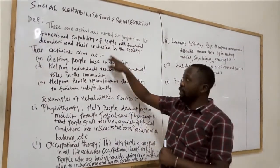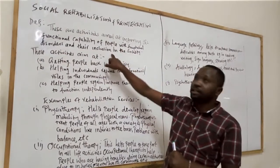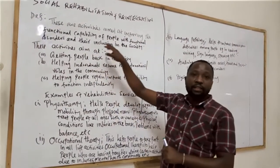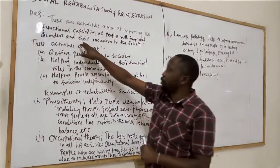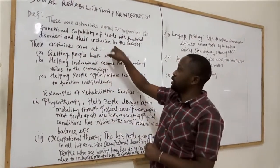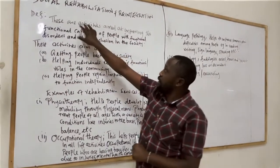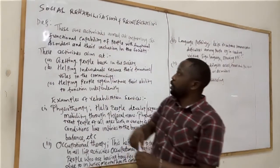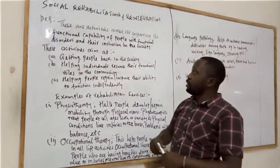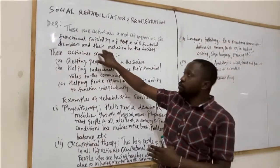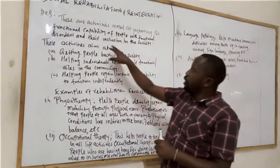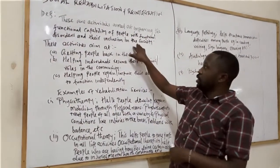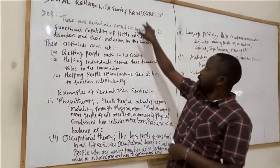When we bring in the aspect of their inclusion in the society, we are now looking at reintegration. Reintegration refers to the assistance that is given to people during their re-entry into the society. The rehabilitation services offered to them are temporary. For example, we look at a scenario where someone does not have a leg. We are not going to fix the leg permanently, but we are going to offer a temporary solution or temporary assistance to this person.